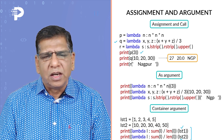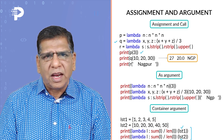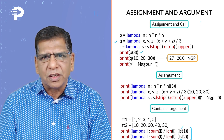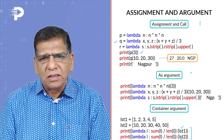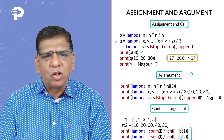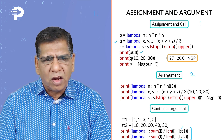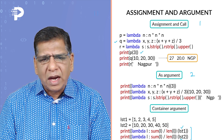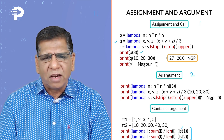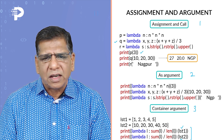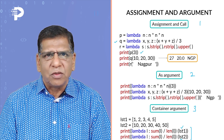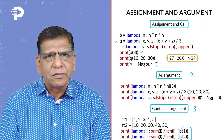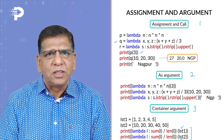We learned three things: first, we can assign a lambda function to a variable and use that variable to call it. Second, we can use a lambda function as an argument to another function — for example, passing three different lambda functions as arguments to print. Third, a lambda function itself can take a container type such as a list as an argument.